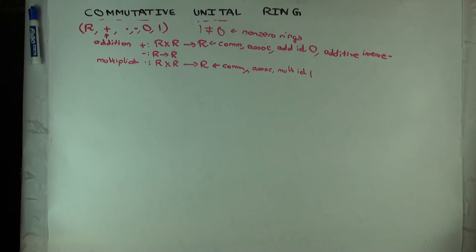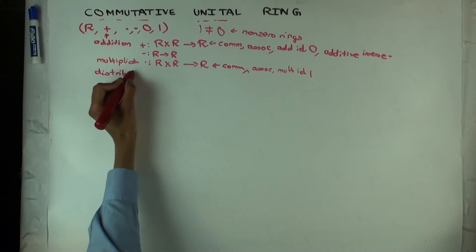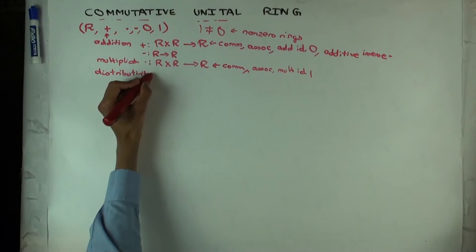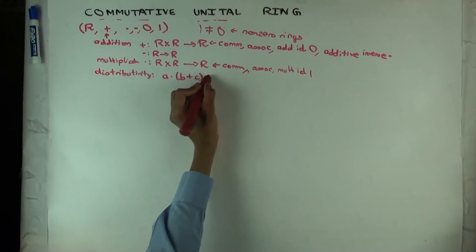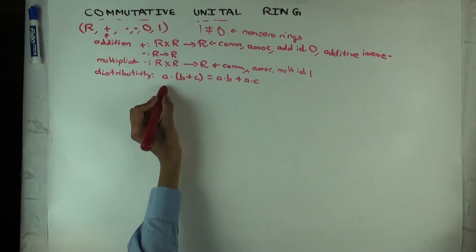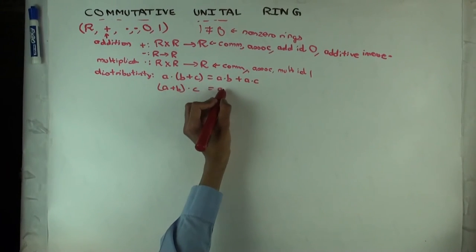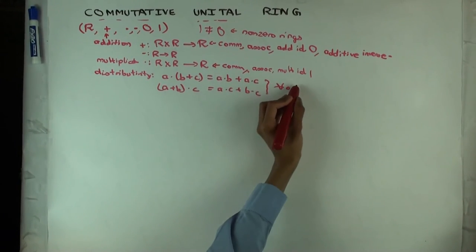And now you have a compatibility, some compatibility condition, and the main compatibility, well the only compatibility condition here is distributivity, which is a compatibility condition between addition and multiplication. It says a dot b plus c is a dot b plus a dot c, and a plus b dot c is a dot c plus b dot c. And these hold for all a, b, c in R. This is for all.